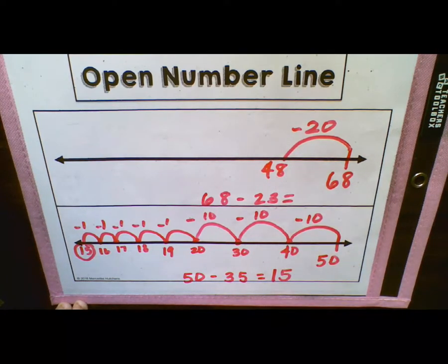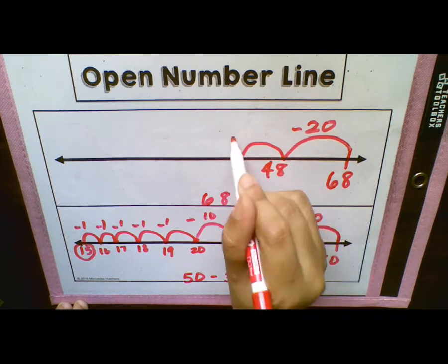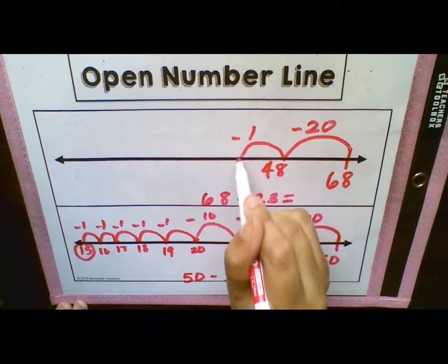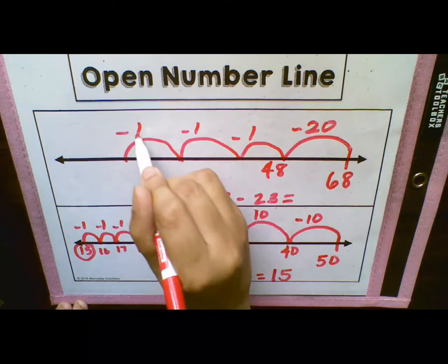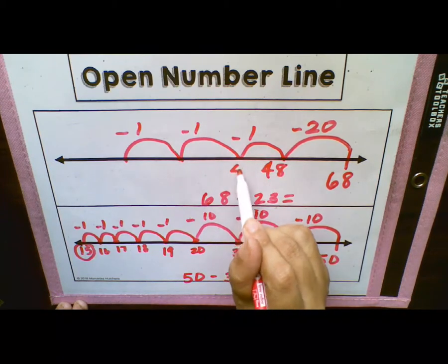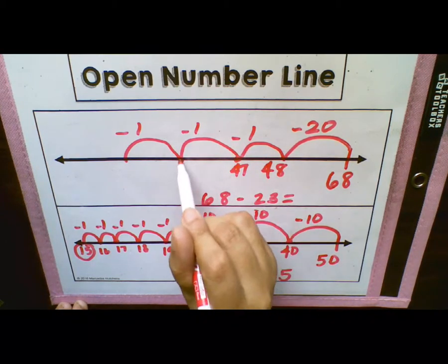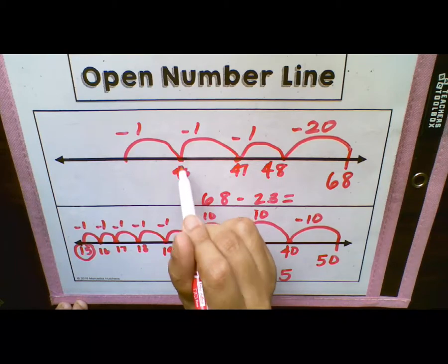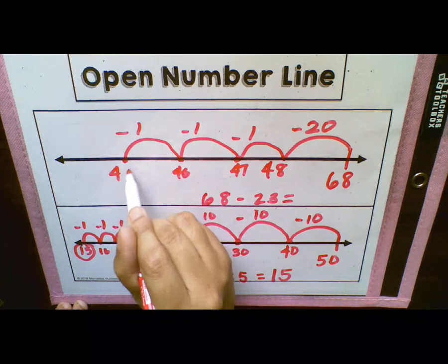So now we've done our two tens in one jump. Now we need to show our three ones — minus 1, minus 1, minus 1. 48 minus 1 is 47, 47 minus 1 is 46, and 46 minus 1 is 45. So we have our final answer: 68 minus 23 equals 45.